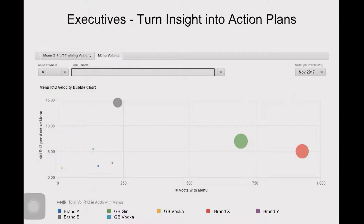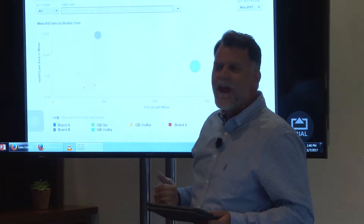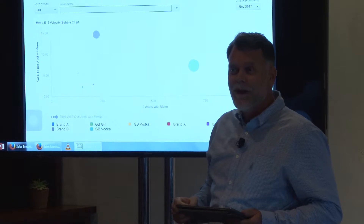This is an iChart — a little chart. It shows you on the bottom, from left to right, how many accounts you have that have menus currently in them. The vertical side shows the number of cases that those accounts deplete on an annual basis if they have a menu. The size of the circle is the total number of cases that that account with that menu has depleted.